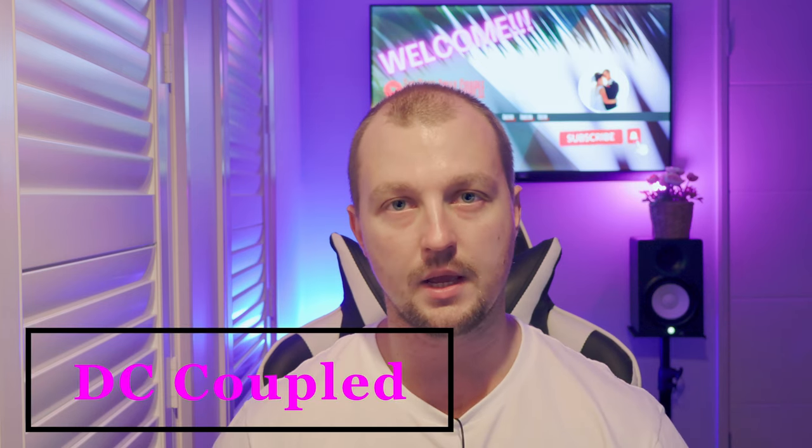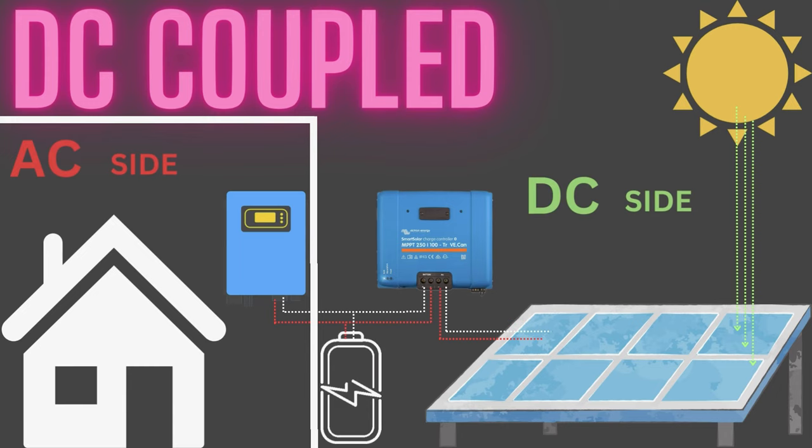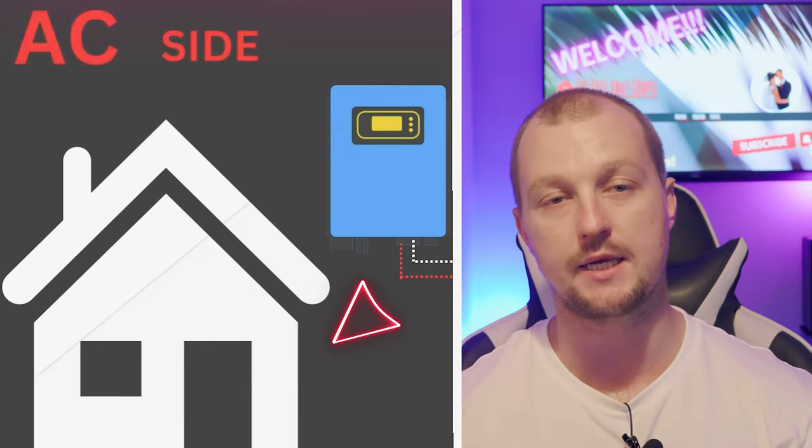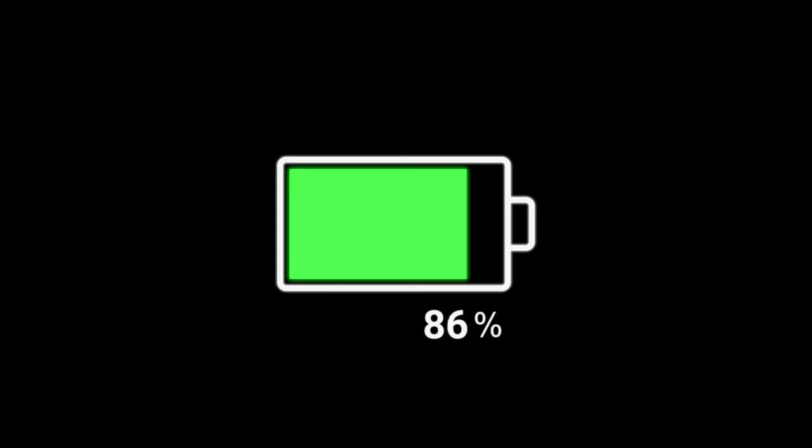Now, onto the other side of the spectrum: the DC coupled system. Here, solar panels play matchmaker with the batteries. The panels send DC — direct current — and charge a bank of batteries first. And when you need the power, an inverter pulls that stored energy from your batteries, converting it into AC energy for your home. It's like a power reservoir, ready when the sun takes a break. But the multiple conversions can be a lot less efficient, and the batteries have to bear all the load, which means they cycle more frequently and this diminishes their lifespan.